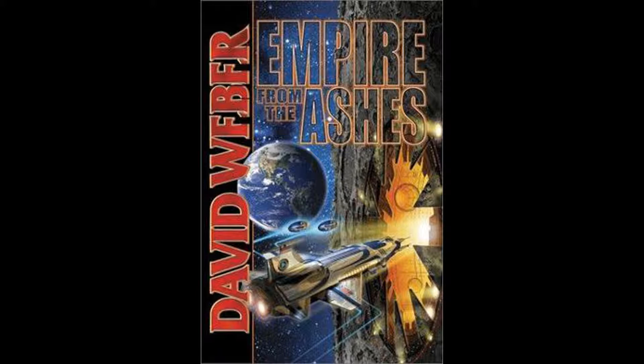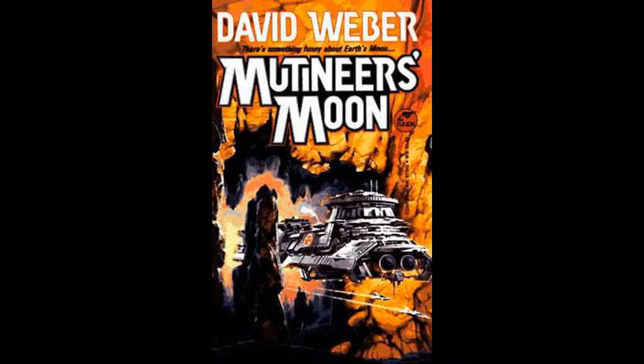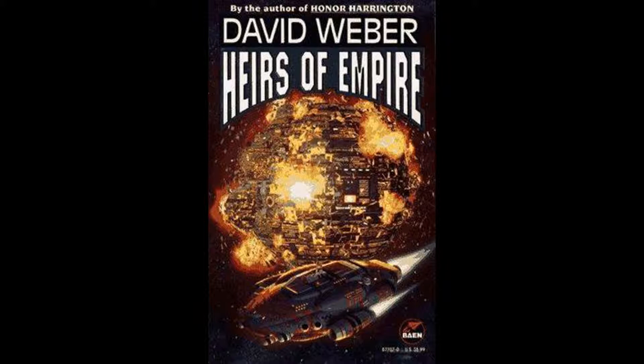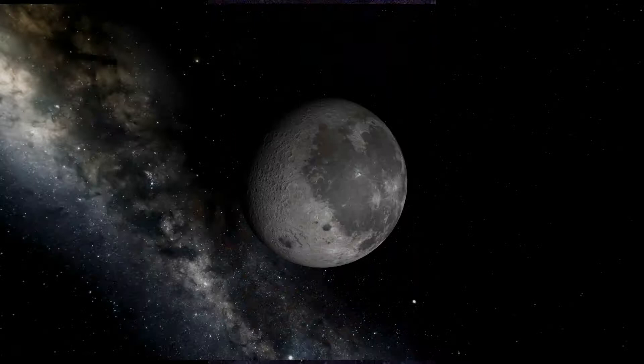The first book of the trilogy is Mutineer's Moon, published in 1991. The second is the Armageddon Inheritance, published in 1993. The last is Heirs of the Empire, published in 1996.